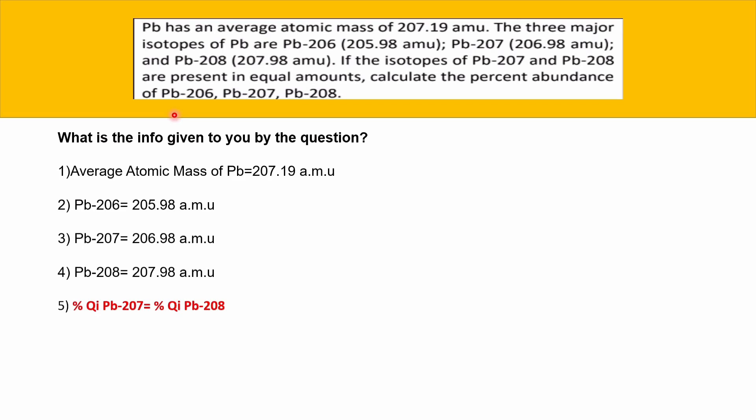That's all the information given. Now, what does the question want? The question wants the percent abundance of Plumbum-206, Plumbum-207, and Plumbum-208 — so we need to find the percent abundance.